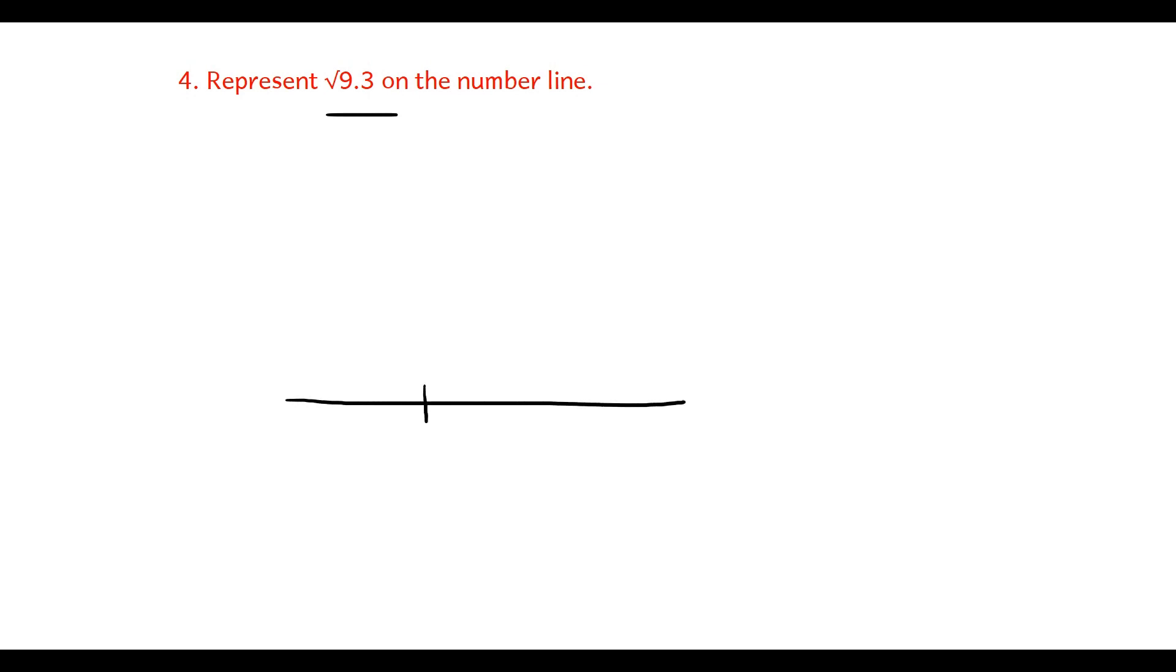Now draw a number line. Take a point O to A which is 9.3. Now mark a point B which is 1 unit from A. The total distance from O to B is 10.3.